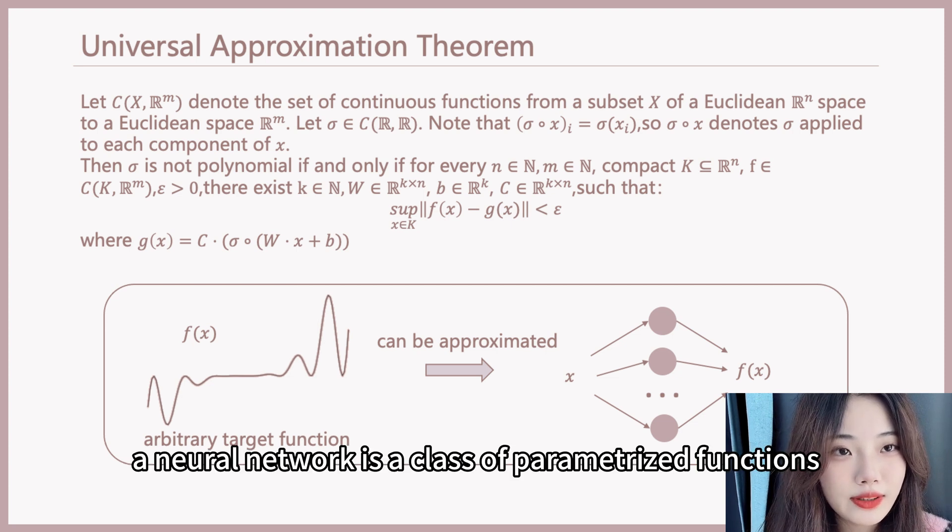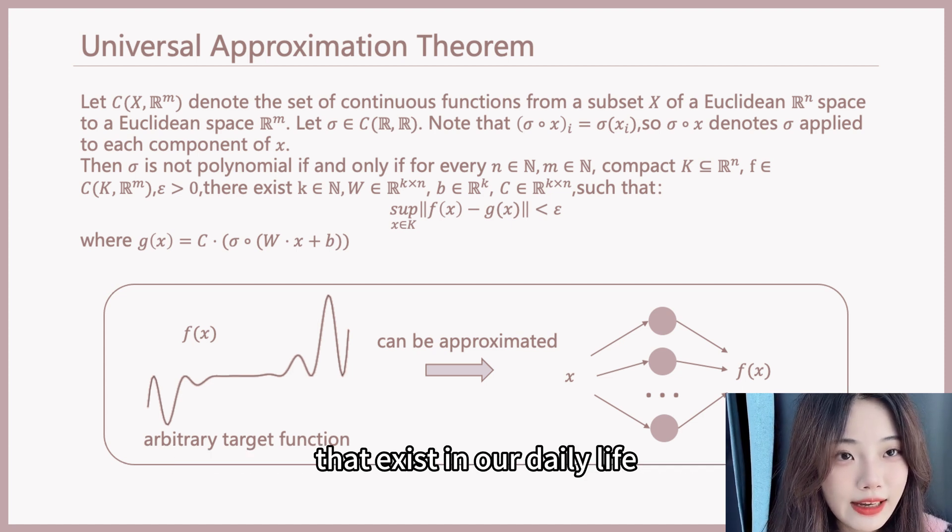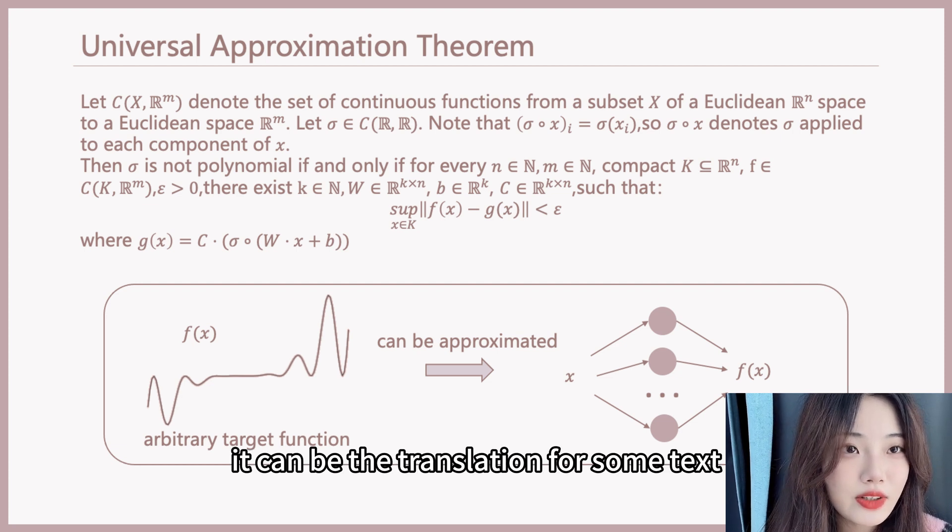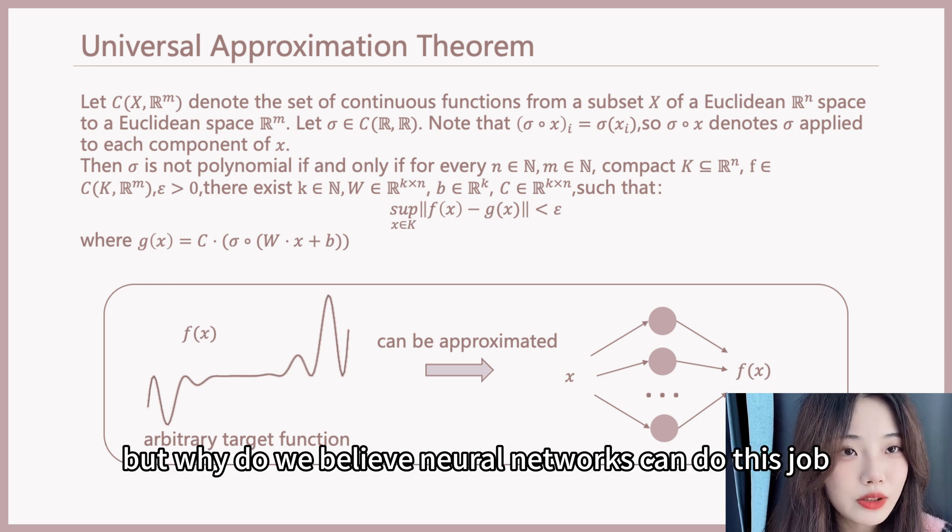A neural network is a class of parameterized functions. We create these neural networks to approximate functions that exist in our daily life or exist in science. It can be the translation for some text or the species of the animal in an image. But why do we believe neural networks can do this job?